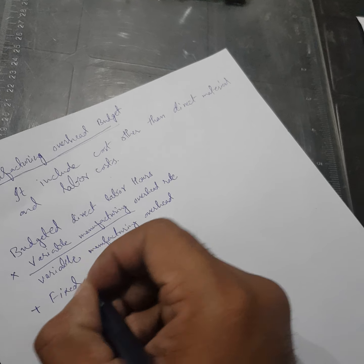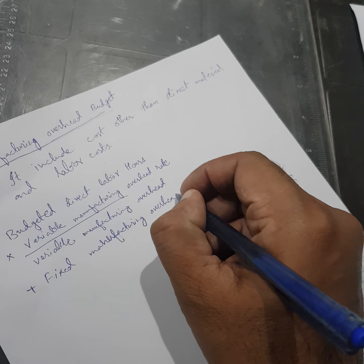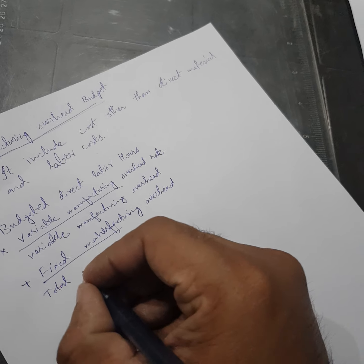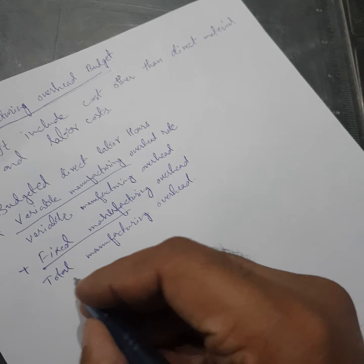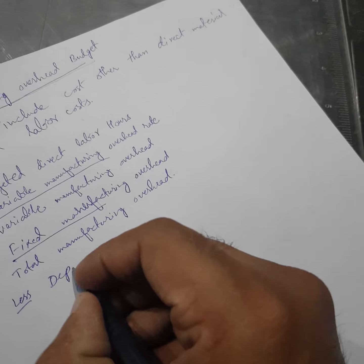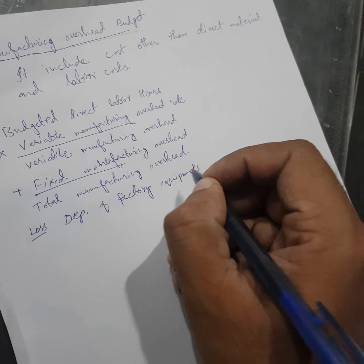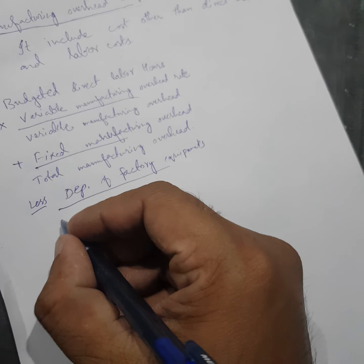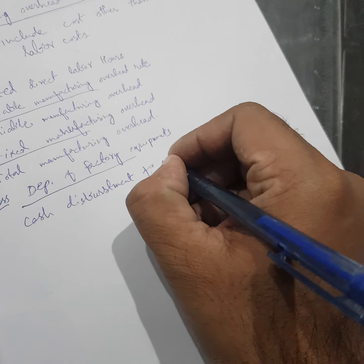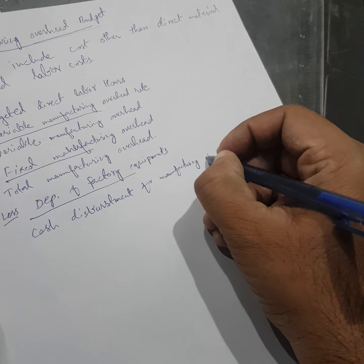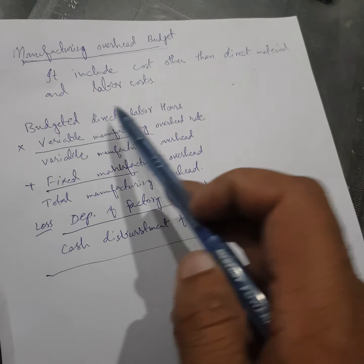We will add fixed manufacturing overhead to get the total manufacturing overhead. As you all know, the depreciation of factory equipment will be deducted, so the cash disbursement for manufacturing overhead will come. This is the manufacturing overhead budget, in which we do not include direct material and direct labor costs.